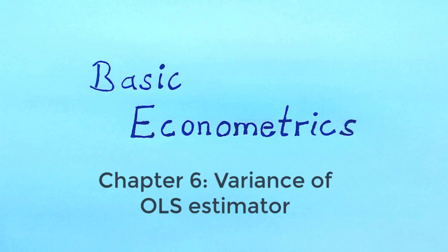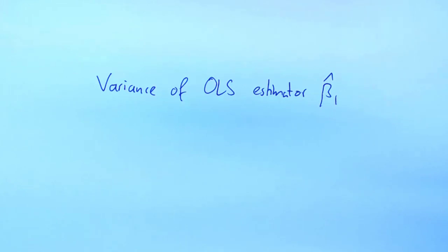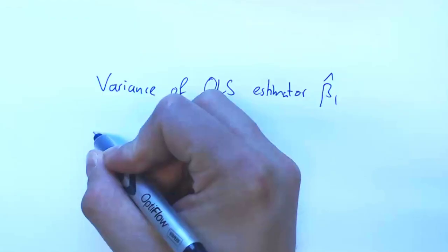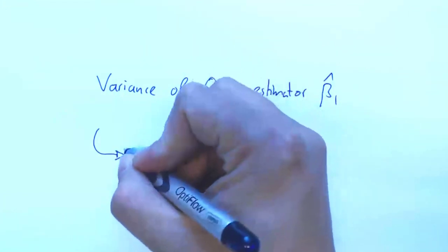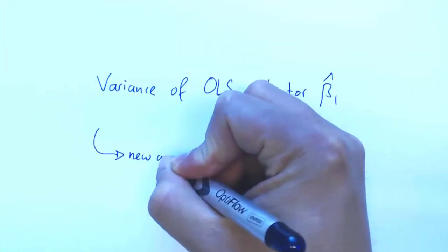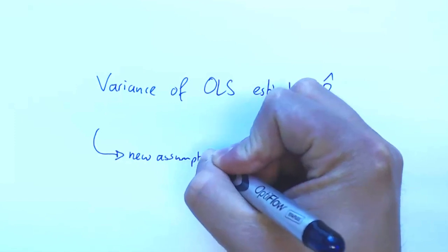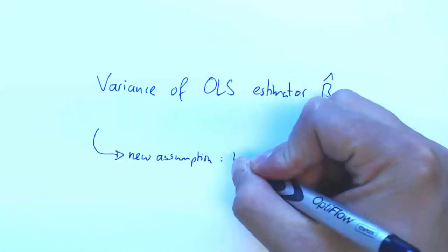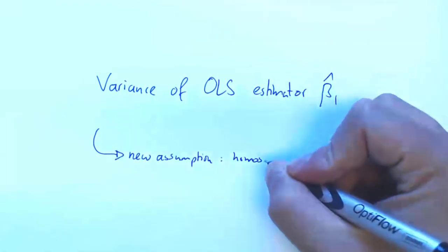So now we want to look at the variance of the OLS estimator. Before we can do that, we need one additional assumption and this assumption is called the homoscedasticity assumption.